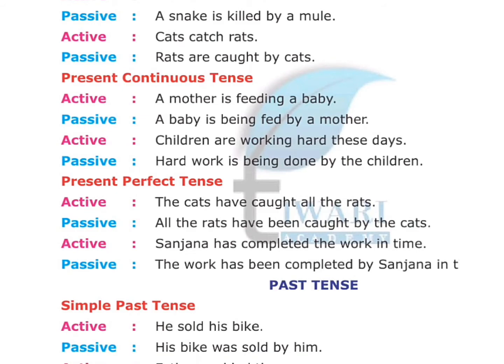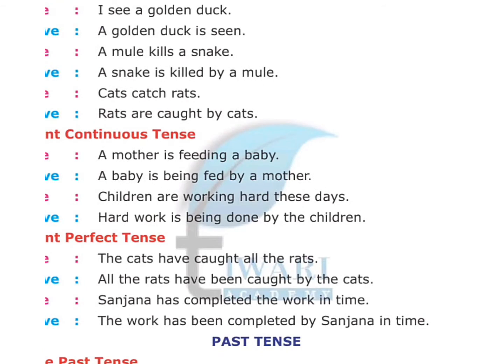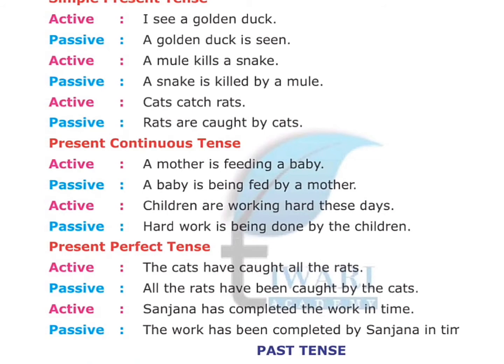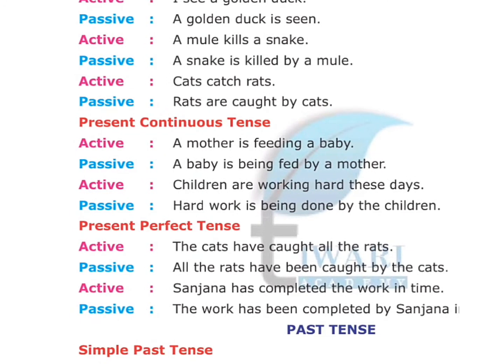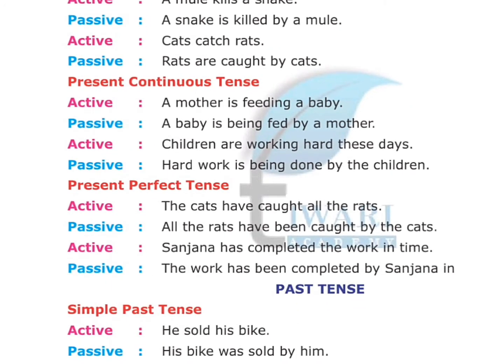Present continuous tense. Active: 'A mother is feeding a baby.' Passive: 'A baby is being fed by a mother.' In present continuous, we use is/am/are being followed by the verb in third form. Another example — Active: 'Children are working hard these days.' Passive: 'Hard work is being done by the children.'